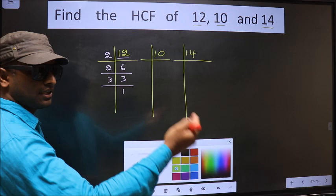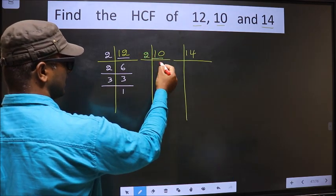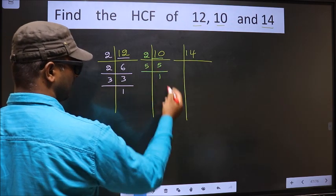Now the other number is 10. 10 is 2 times 5. Now we have 5. 5 is a prime number, so 5 times 1 is 5.